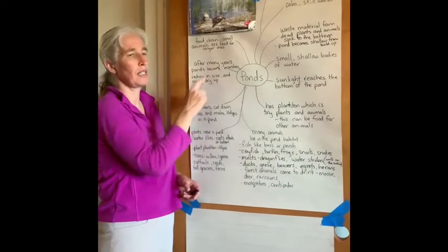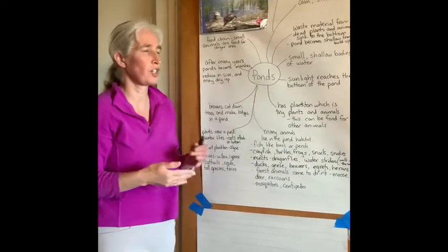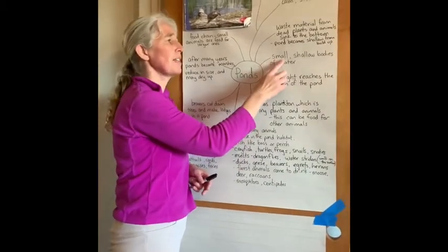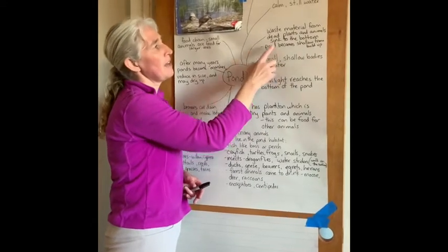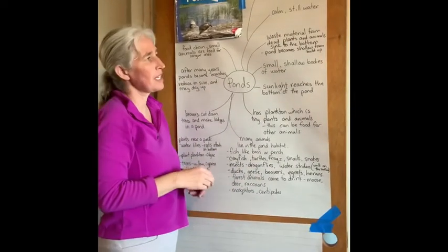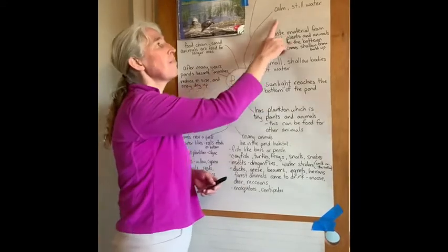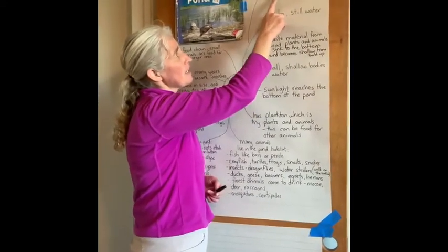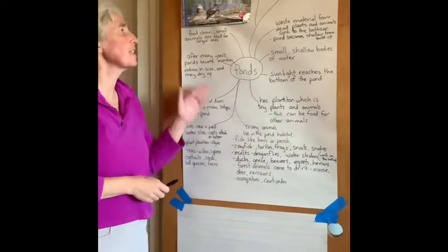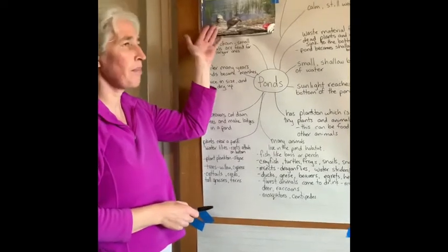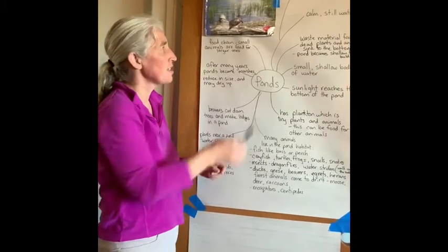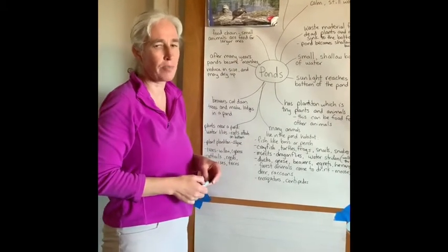There's a food chain in the pond, so the small animals are food for the larger ones — that's kind of like within any habitat. Ponds are small, shallow bodies of water, and the waste material from dead plants and animals can sink to the bottom and build up over time, making the pond more shallow. A pond has calm, still water and muddy soil. The ground soaks up the water like a sponge around it. I'm always going to try to find a book about the topic or do research on the computer to find more resources.